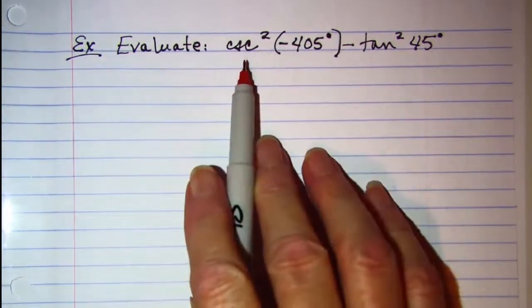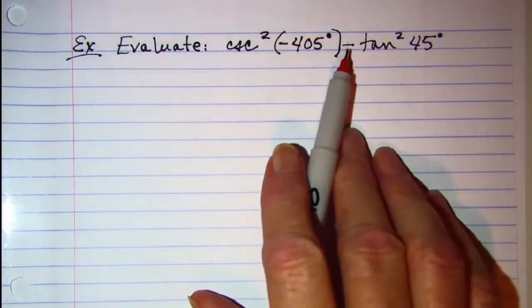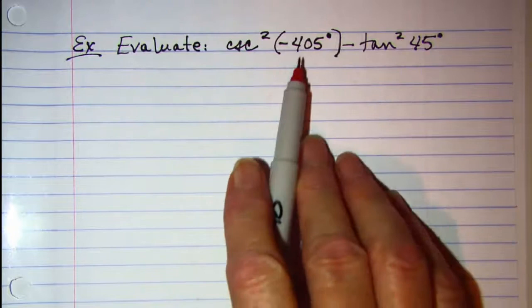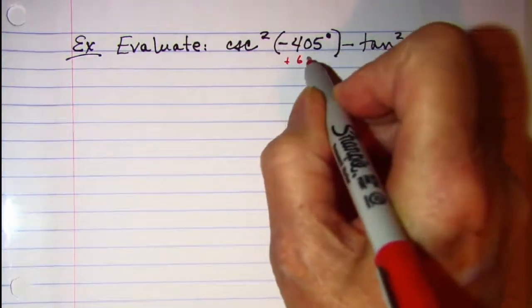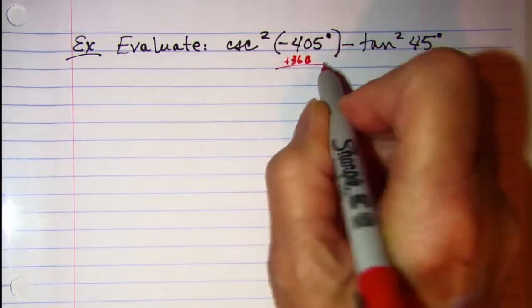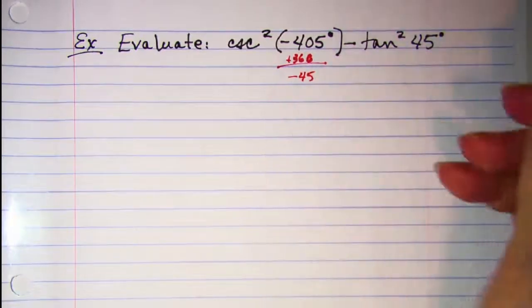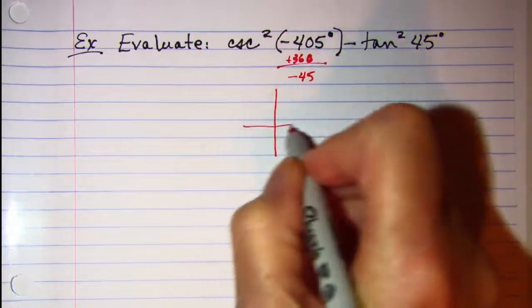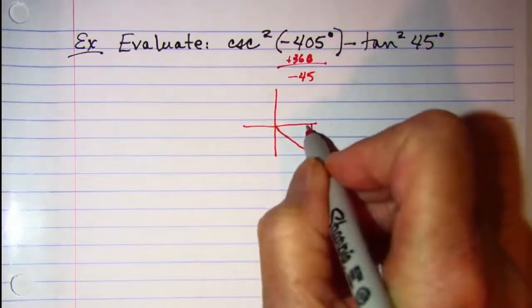So we have csc²(-405°) - tan²(45°). Alright, I need to add 360. This is the same as negative 45. So our reference triangle is in quadrant 4.